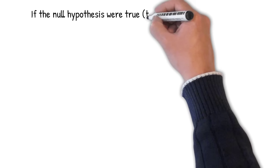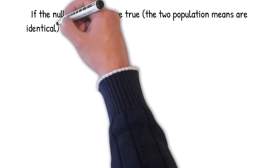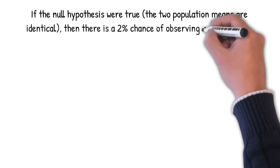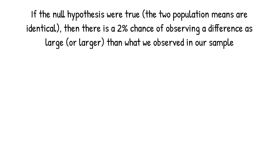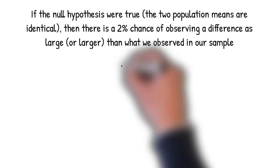Essentially, this means that if the null hypothesis were true, in other words, that the two population means are identical, then there is a 2% chance of observing a difference as large or larger than what we observed in our sample.